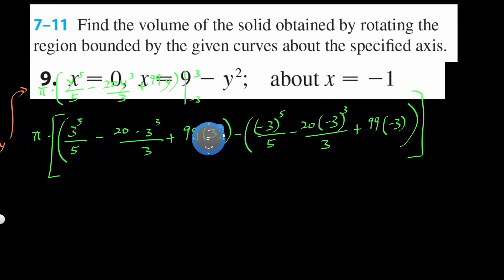That's a lot of numbers. Let's try not to make a mistake here. So 243 over 5. Remember, we got pi outside. Minus 3, and one of the 3 cancels, so it's 3 cubed. That's 9. 9 times 20, 180 plus. Plus, that's just going to be 297 minus, this whole thing minus, be careful.